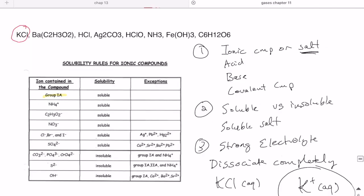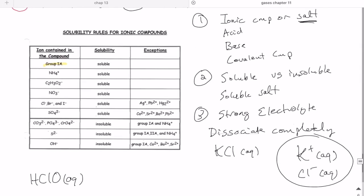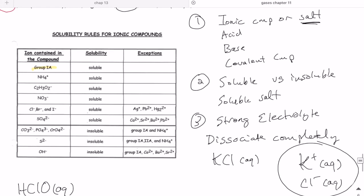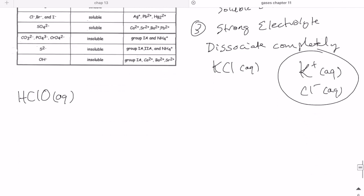Let's take a look at a different example, say HClO. So I take HClO put it in water, what am I going to see in solution? Going through the steps, what do I have in front of me? Is it an ionic compound, a salt, an acid, base, or covalent compound? Well its formula starts with an H so that tells me that this must be an acid.